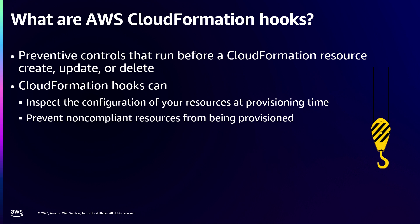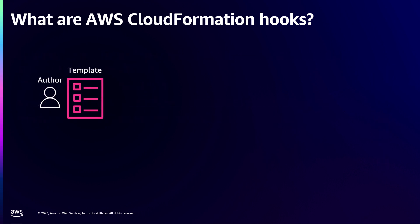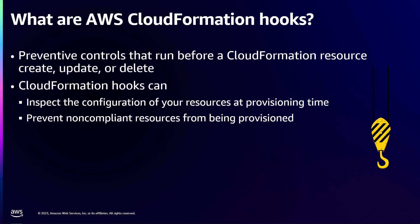Traditionally, this is done by pointing a command line tool at static templates. But the problem is that those static templates can contain functions and variables. When we analyze a CloudFormation stack at deployment time, we get to see the actual values for those resources immediately before we deploy them — and we can prevent non-compliant resources from being deployed. With CloudFormation hooks, you can centrally enforce these controls, rather than having to find each and every CI/CD pipeline in your organization to embed those command line tools in.